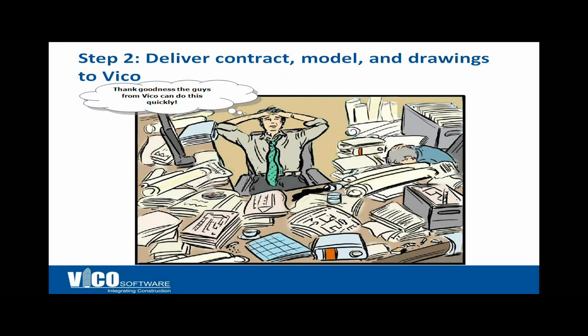All you have to do is deliver the contract, the model, and the drawings to Vico. This is really going to remove a very tedious task from your team and get it into the hands of specialized folks who can help you. We believe this report will typically take between one and two business weeks — probably closer to two. It depends on how many systems are in the model and how large the model is, but a 10-day average turnaround is what you should expect.